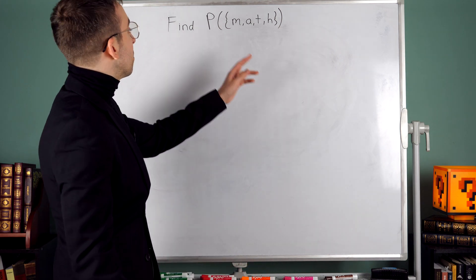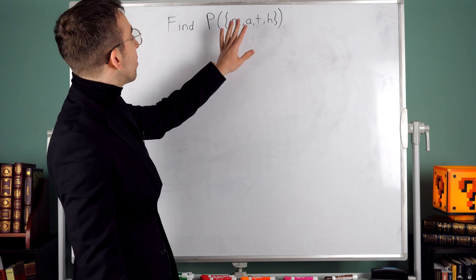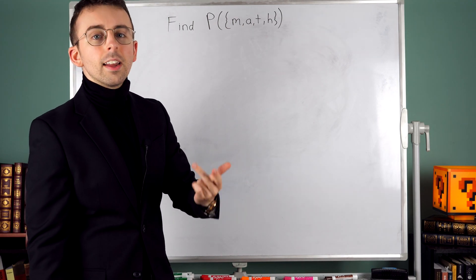The only really important thing here is how much stuff is in the set. Here we have four elements in our set: m, a, t, and h.